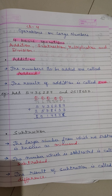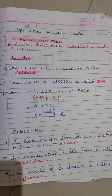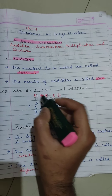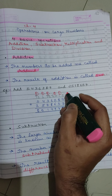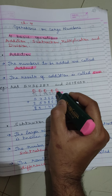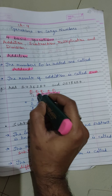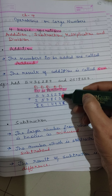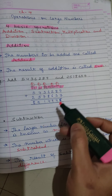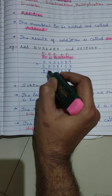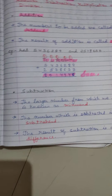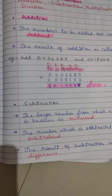Now let's see a small example: add 5,43,62,89 and 2,57,86,57. First, we will make the place value columns — ones, tens, hundreds, thousands, ten thousands, lakhs, and ten lakhs. After making this, we will arrange the digits according to their place values. Then we will simply add and find the result. This final answer is what we call the sum.